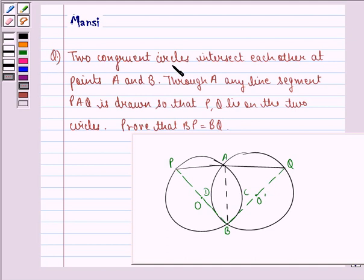The question says two congruent circles intersect each other at points A and B. Through A, any line segment PAQ is drawn so that P and Q lie on the two circles. Prove that BP is equal to BQ.